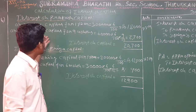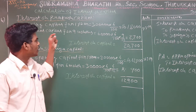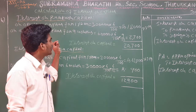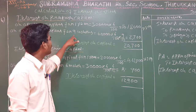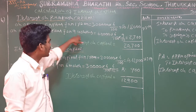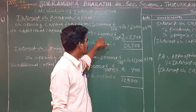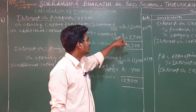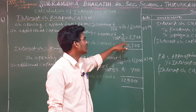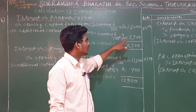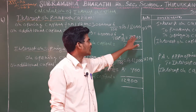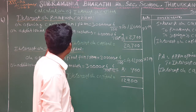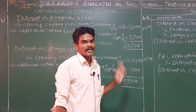Then for the additional capital of Prakash, the additional capital of 60,000 is for 9 months. So: 60,000 × 6/100 × 9/12 = Rs. 2,700. The total interest on capital for Prakash is 18,000 + 2,700 = Rs. 20,700.